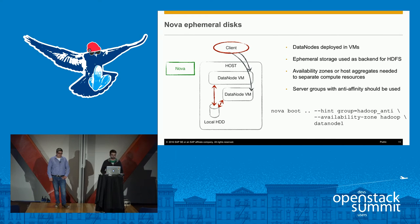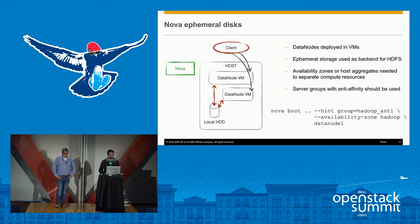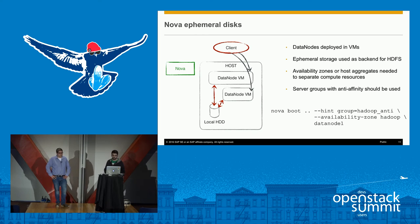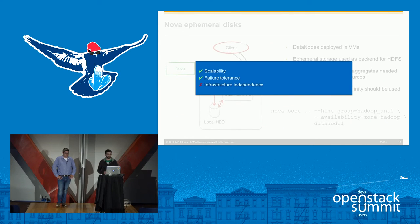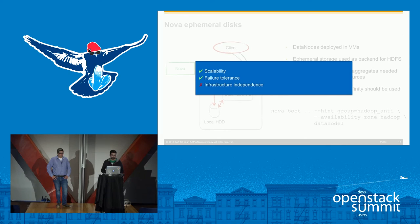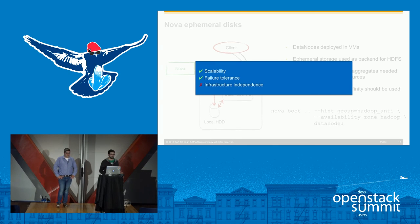To show that this is easy to achieve, we have the Nova boot command here. You boot a VM in a server group by passing a group hint to the Nova scheduler, specifying the availability zone — and you basically get a data node VM booted with anti-affinity activated in its own availability zone. Looking at this more closely: we have gained scalability since we can just boot up new VMs to add more data nodes. We are still failure-tolerant, but we must remember to use the anti-affinity feature. However, since we are still bundling storage with the compute nodes, we cannot say we are infrastructure-independent.